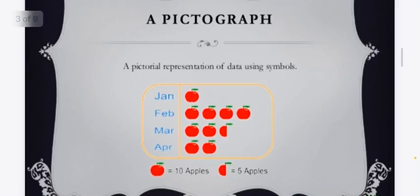So starting with pictograph. Pictorial representation of data using symbols is called pictograph. So here is an example of a simple pictograph where one apple symbol represents 10 apples and half apple symbol represents 5 apples.